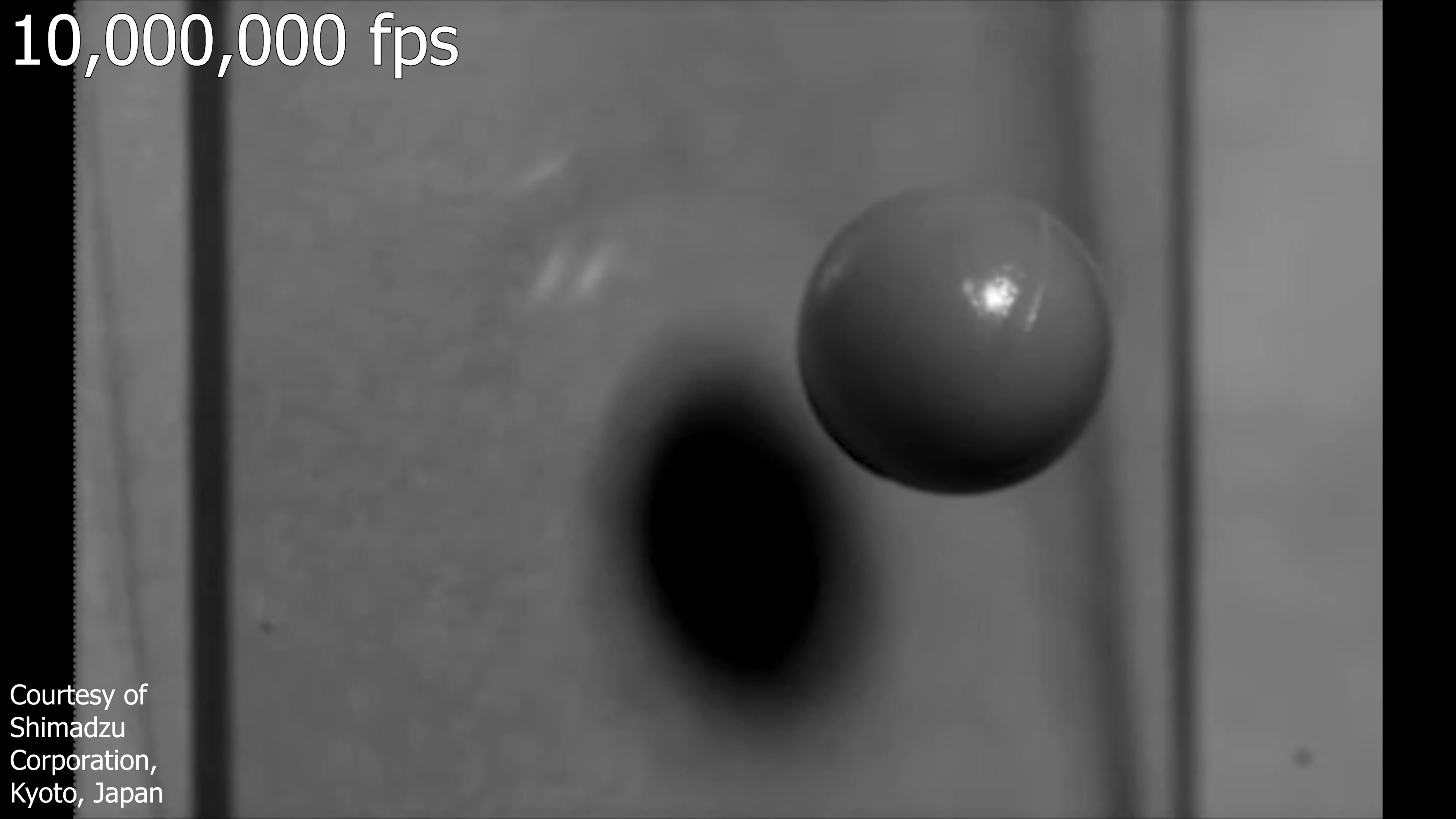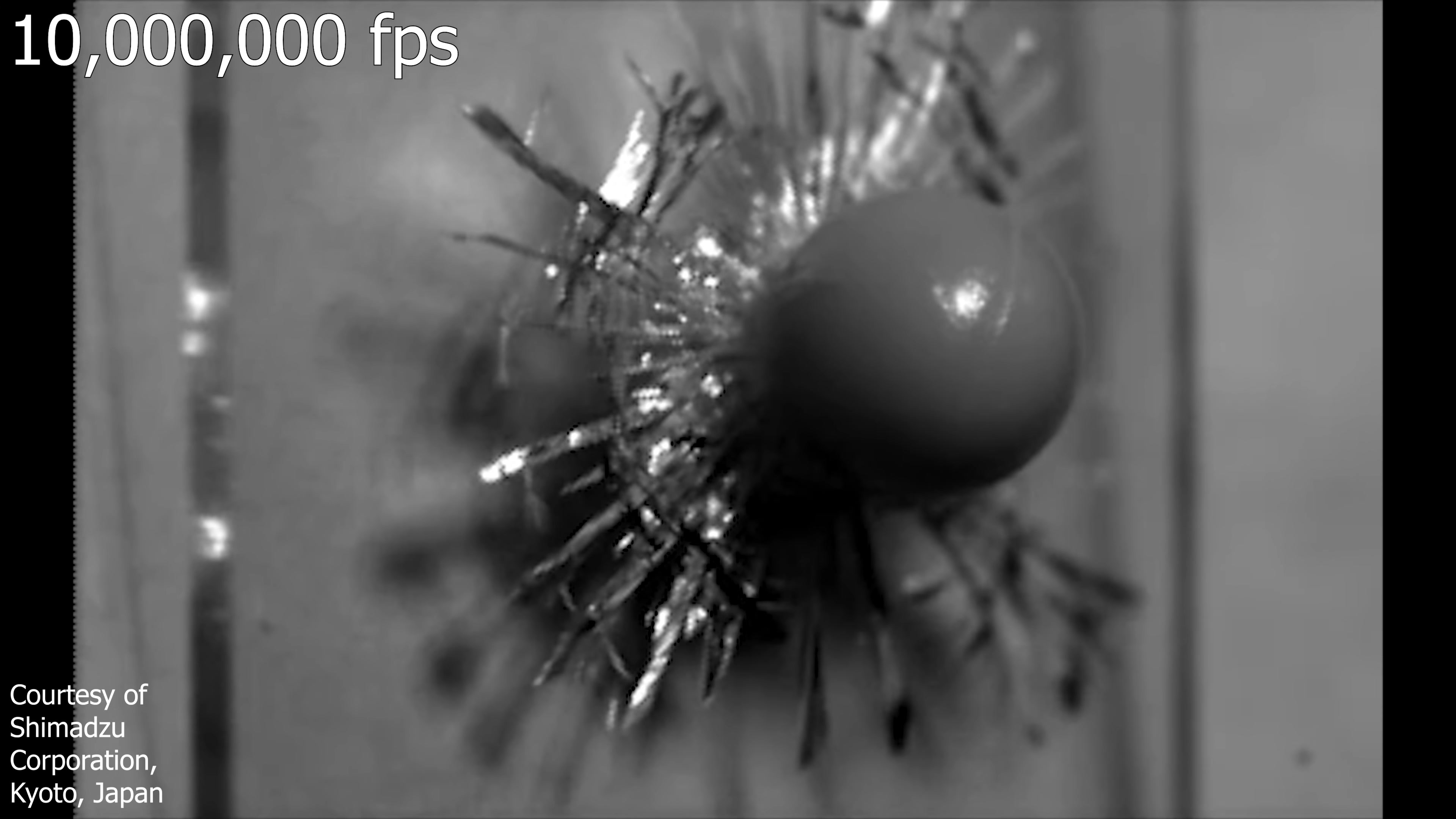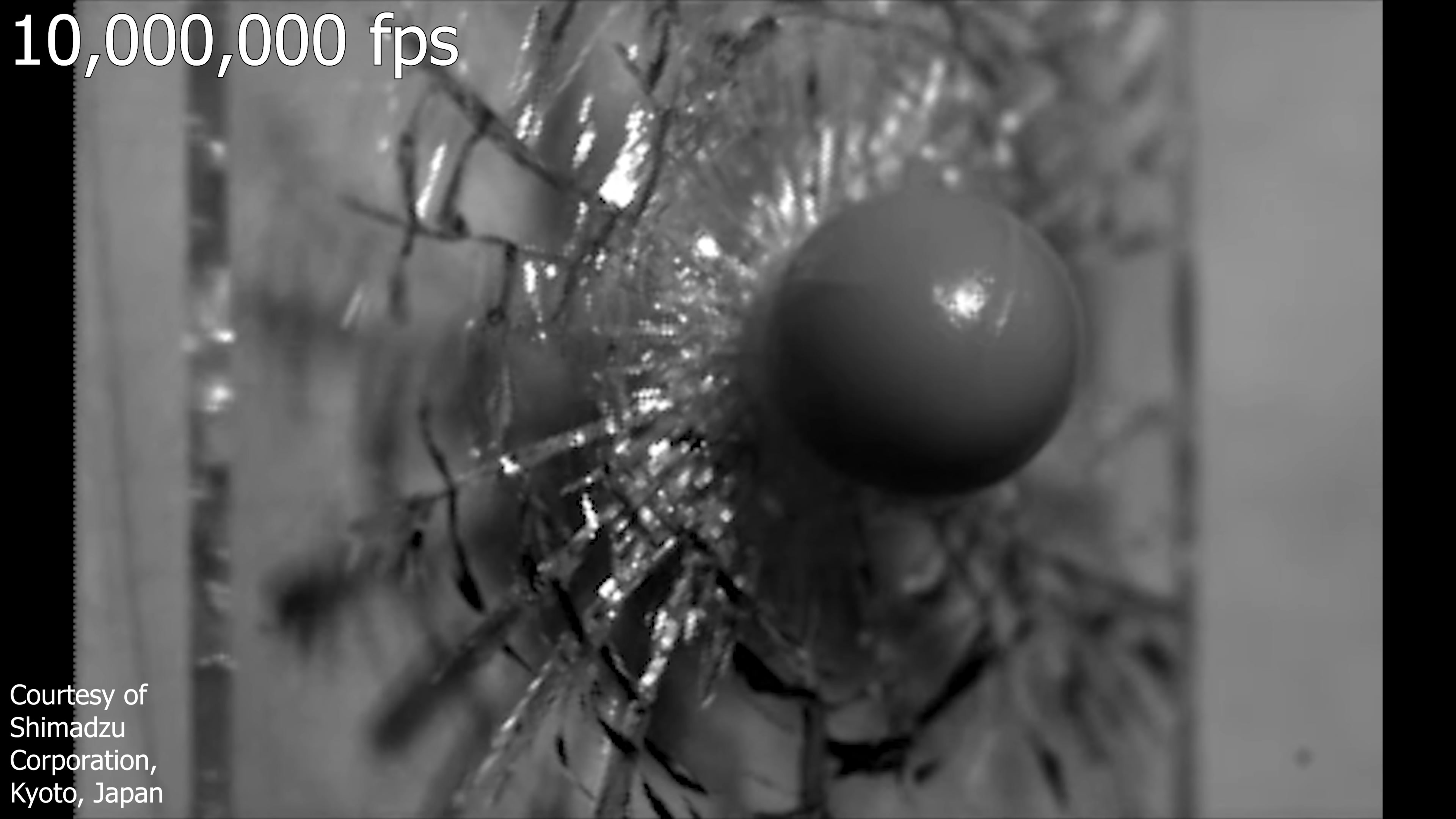And then here's another shot of a little bit higher resolution. Now these cracks propagating through are moving several times faster than the speed of a bullet. So you can see that the ball is moving at extreme velocities, but you can't even see it moving in the frame. That's because it's filmed at 10 million frames per second.